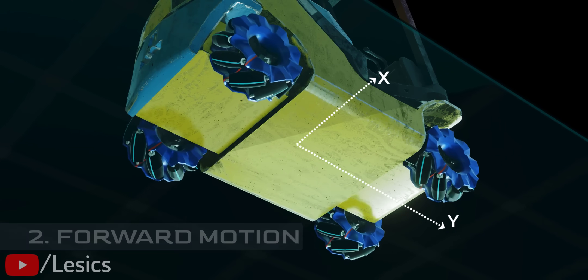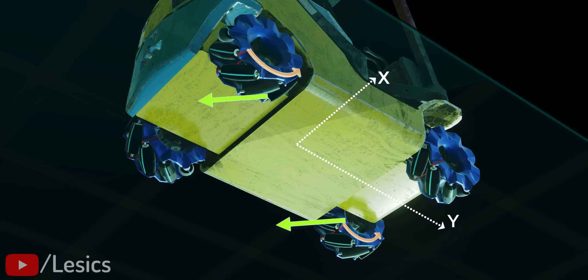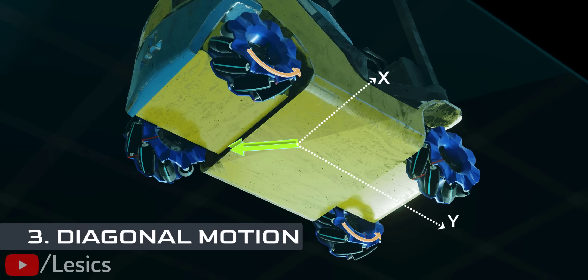What if we keep only one pair of the wheels on? The net force will make it move diagonally.